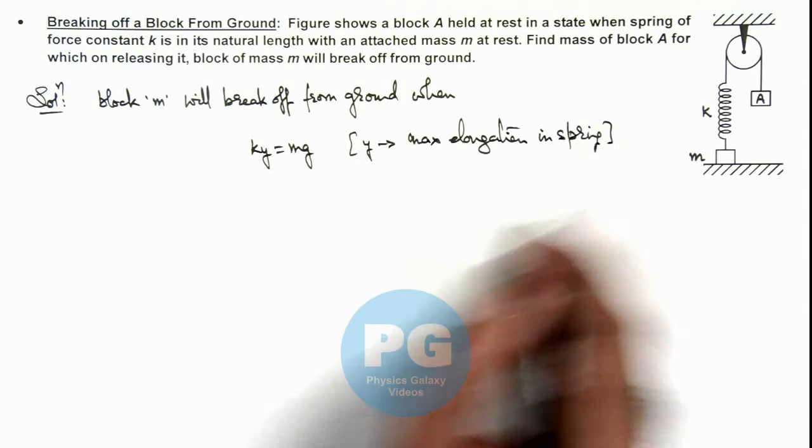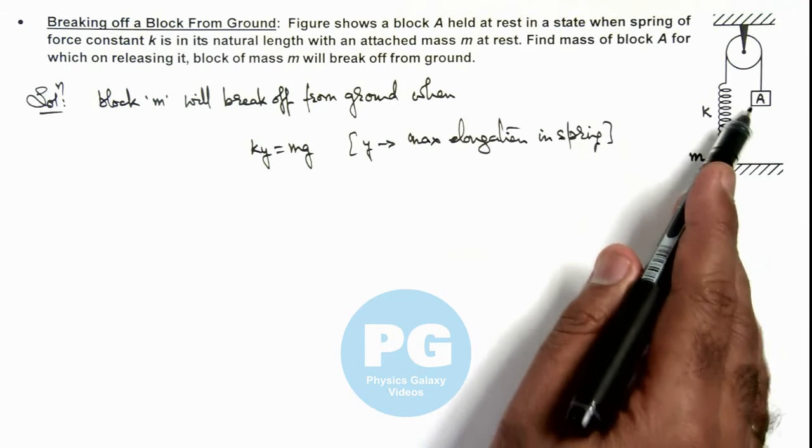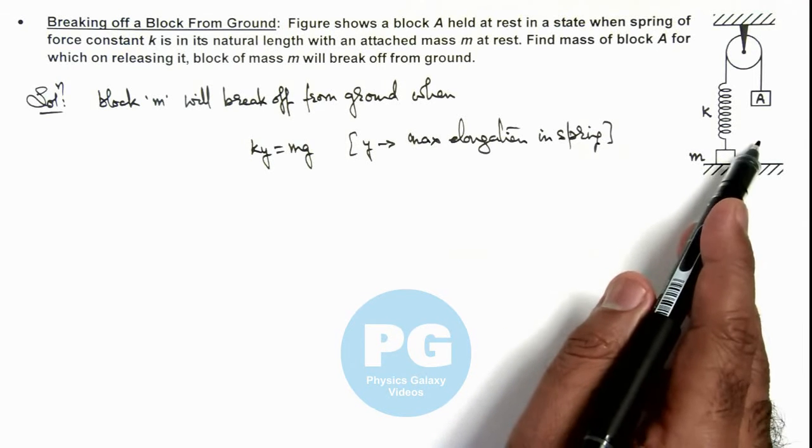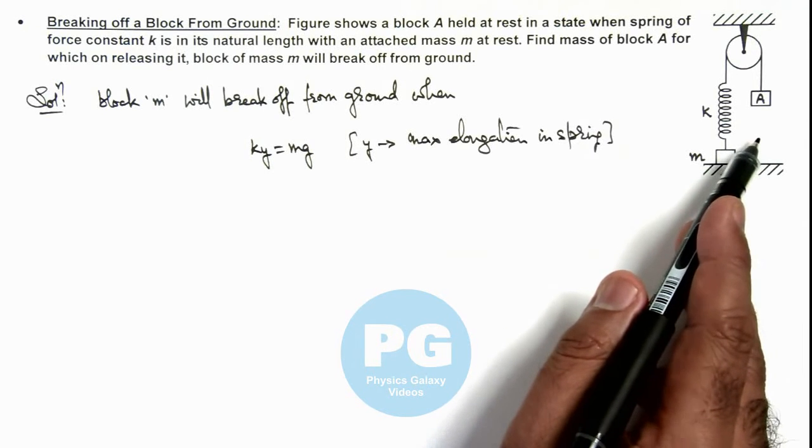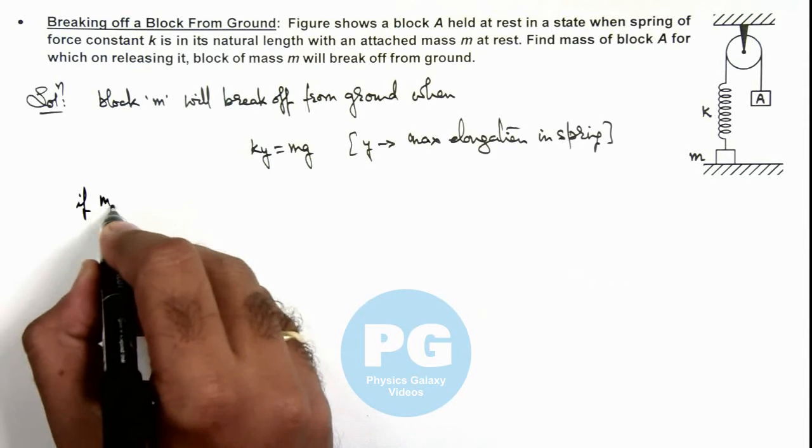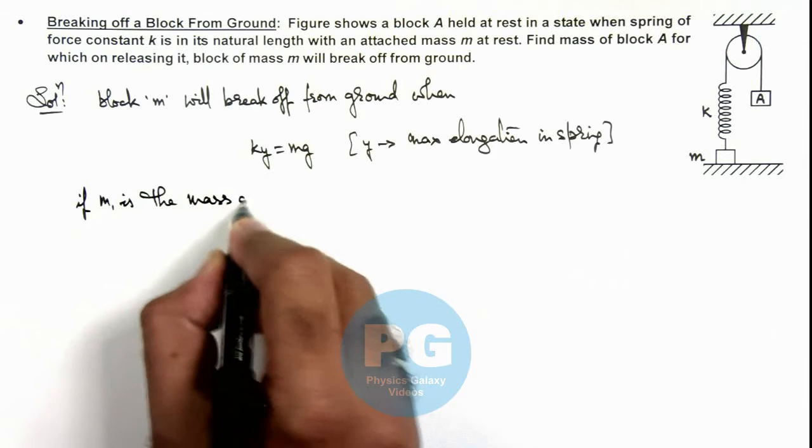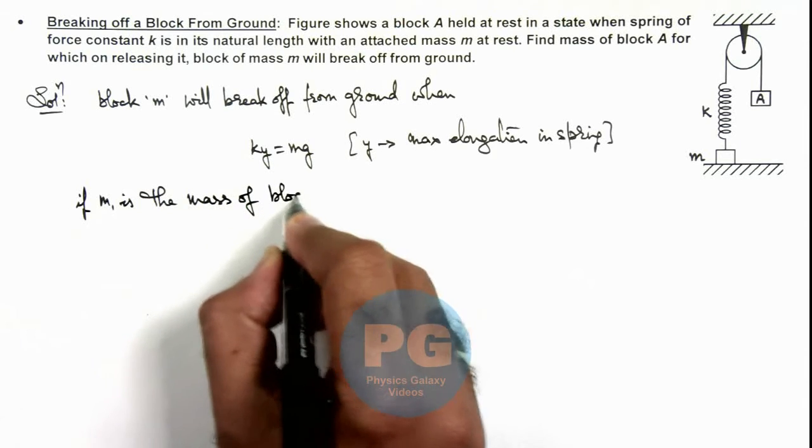So in this situation when we release block A, it will fall by a distance y, and that is a maximum elongation. That means block A will again come to rest at that point. So we can write: if m1 is the mass of block A.